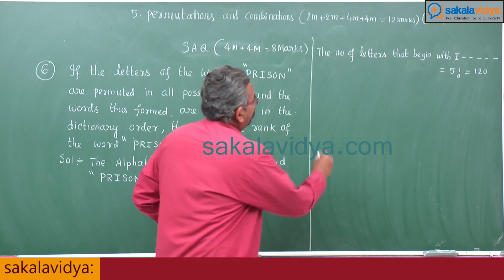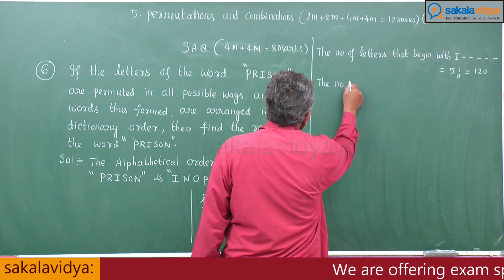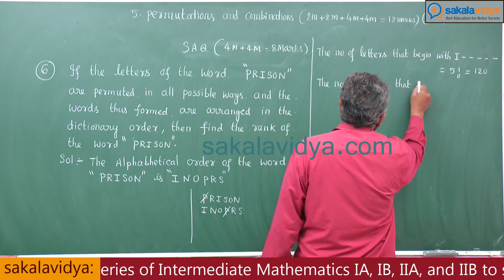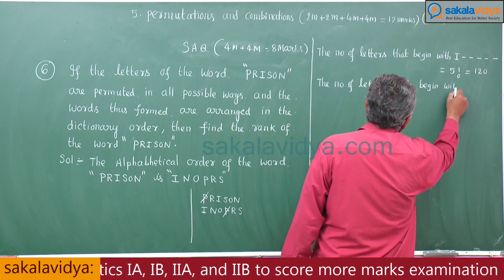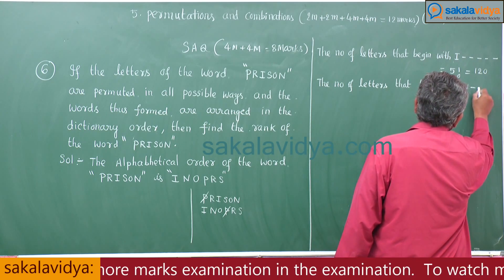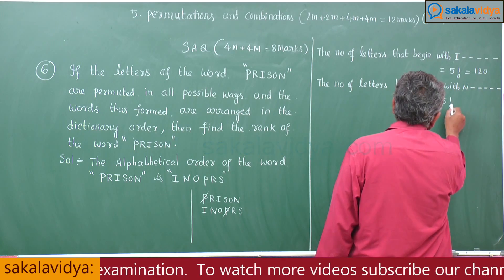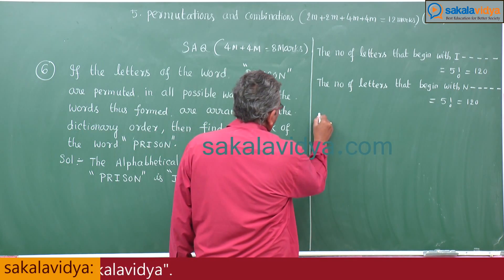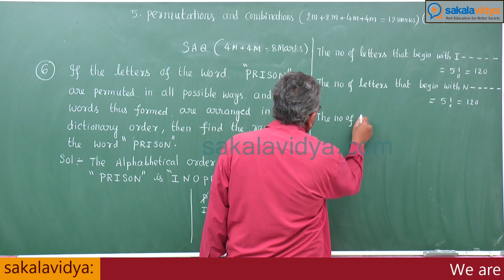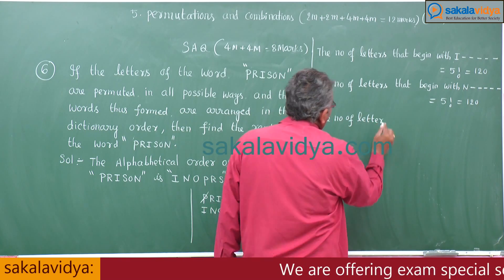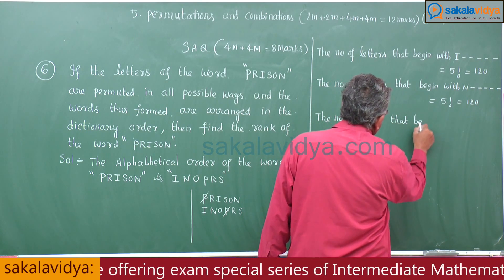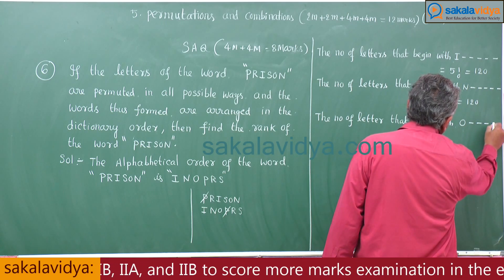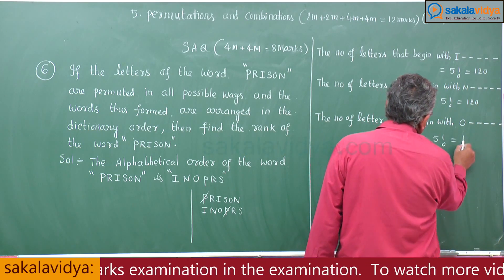The number of words that begin with N: 5 remaining places, so 5 factorial equals 120. Next, the number of words that begin with O: again 5 places, 5 factorial equals 120.